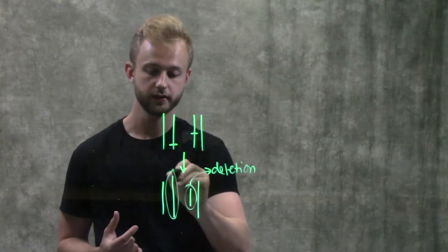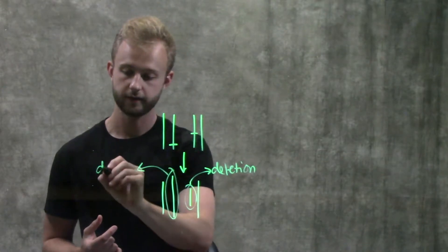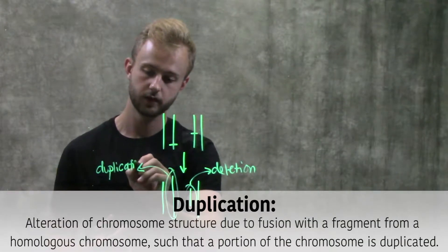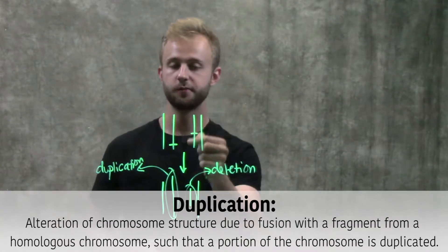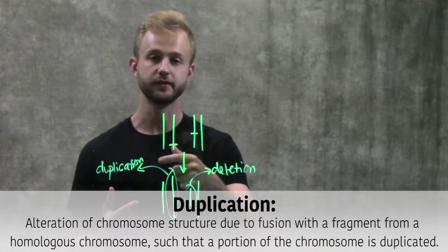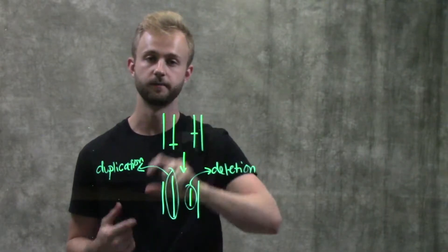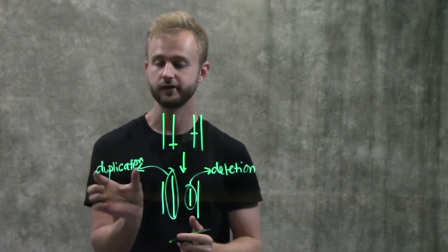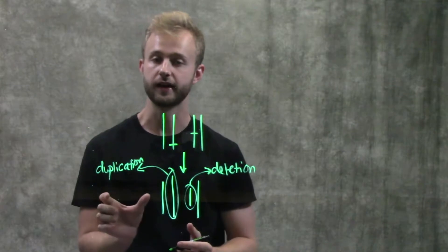However in this chromosome we have something called a duplication because now this portion that was exchanged during crossing over, there's two copies of that gene on this chromosome. And so we say that that gene has been duplicated.